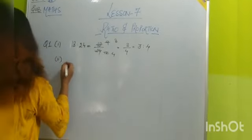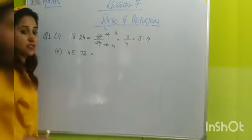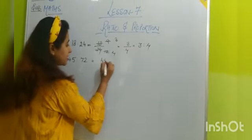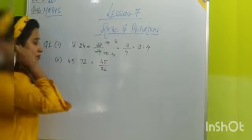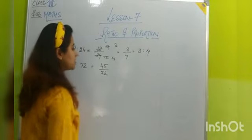Another part of this question is 45 ratio 72. So again you can write this 45 upon 72. You can cut it by same number. What is that number? You cut it by 3.